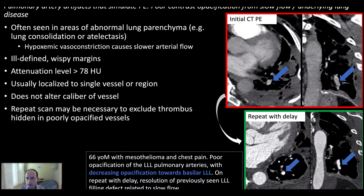In another case, this patient doesn't necessarily have heart failure but has an abnormality in their lung. You can get focal slower flow in pulmonary artery segments due to lung abnormalities causing vasoconstriction. There's an apparent filling defect in the center of the left pulmonary artery. The lung is abnormal — there's a loculated pleural effusion and volume loss in this post-surgical case. The study was repeated with delay triggering from the aorta, and the pulmonary artery branch is totally normal. Underlying lung disease in that segment is a helpful clue.